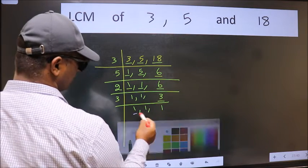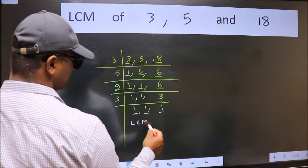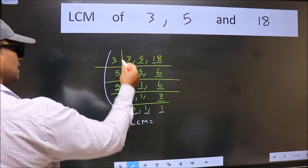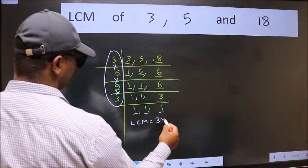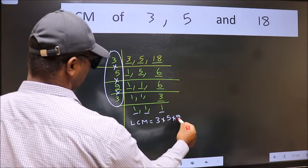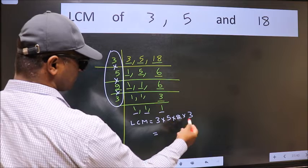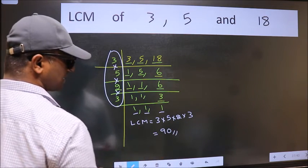So we got 1 in all the 3 places. So our LCM is, LCM is the product of these numbers. That is 3 into 5 into 2 into 3. When we multiply these numbers we get 90, is our LCM.